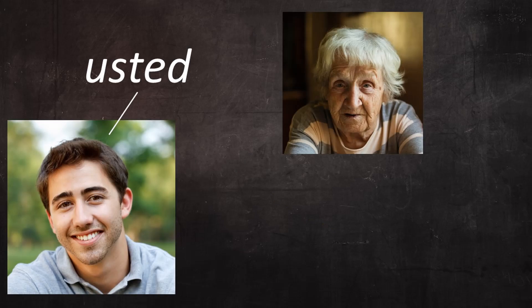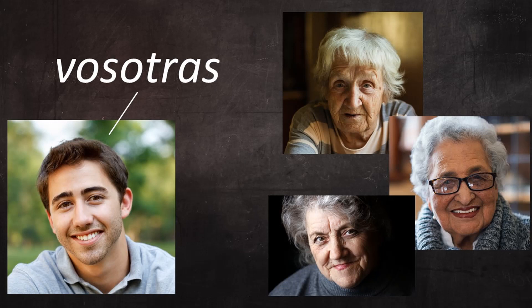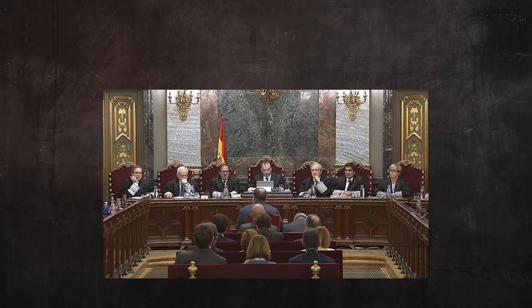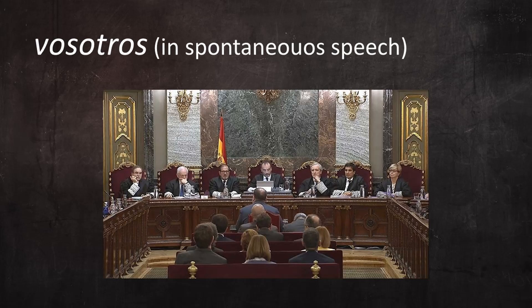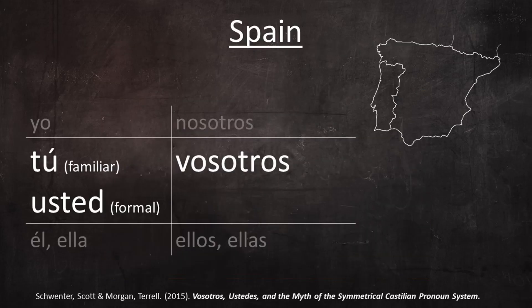For example, a young Spaniard who might address a single older woman he just met as usted would typically address a group of such women as vosotras, not ustedes. And even in very formal situations, such as when speaking before a panel of judges, speakers who might initially address the panel as ustedes in prepared statements would revert to vosotros in spontaneous speech. So for practical purposes, the situation in Spain features a contrast between tú and usted in the singular, with vosotros serving as the only second-person plural in most communication.